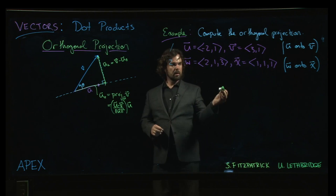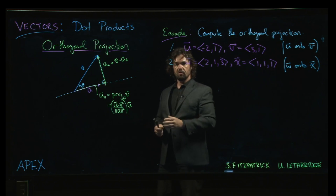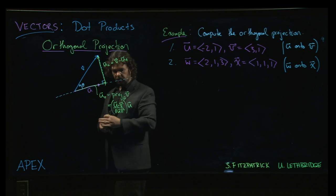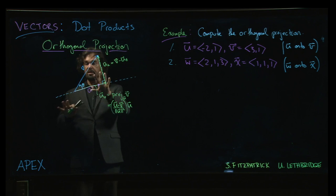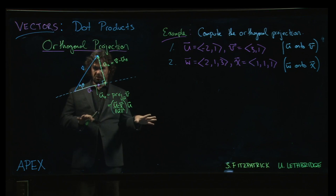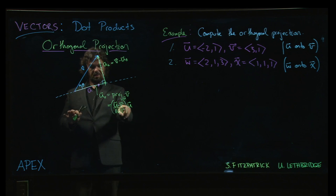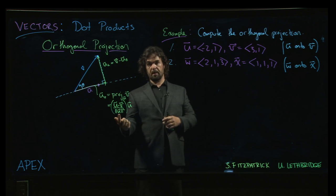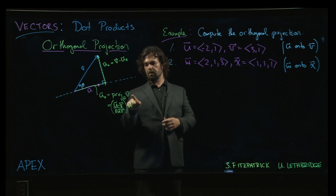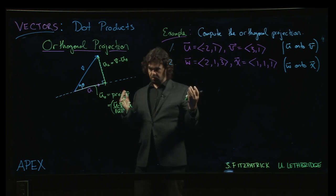All right, so we're going to put this orthogonal projection formula to use in this example. Now one thing you've got to keep in mind is to pay attention to which vector is being projected onto which other one. Think about the formula because I've written the formula here with u dot v over magnitude of u squared multiplied by the vector u.